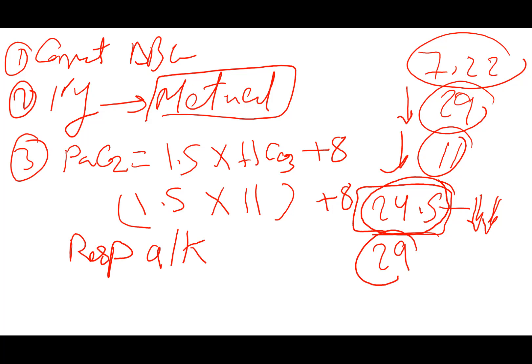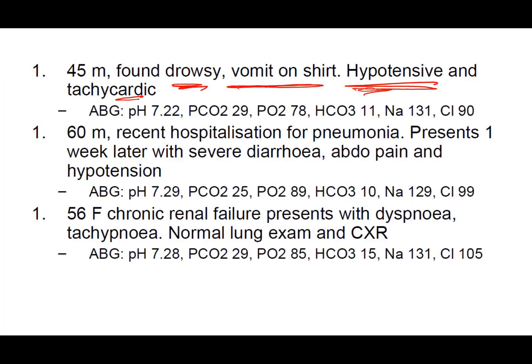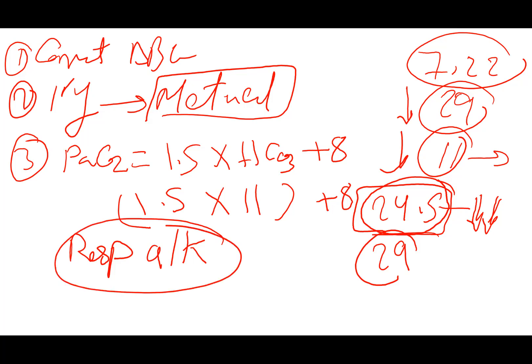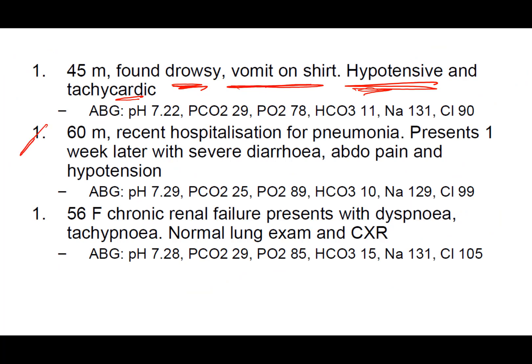Wait — the actual CO2 of 29 is higher than the expected 24.5, indicating a secondary respiratory acidosis mixed with the primary metabolic acidosis. The metabolic acidosis could be lactic acidosis from shock; the respiratory acidosis could result from aspiration pneumonia. If we treat only the primary abnormality and miss the secondary pathology, we may overlook a life-threatening condition. This is the importance of performing compensation calculations when interpreting arterial blood gas results.